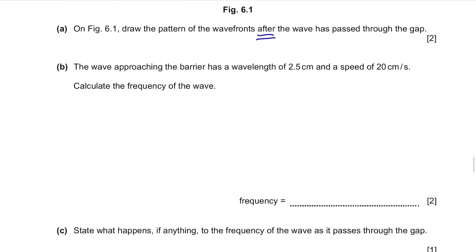Part B. The wave approaching the barrier has a wavelength of 2.5 cm and a speed of 20 cm per second. Calculate the frequency of the wave. You need to know the formula for this. It's about wavelength and speed, so it's V equals f lambda, which means speed equals the product of frequency and wavelength.